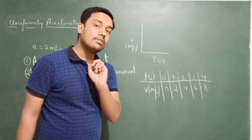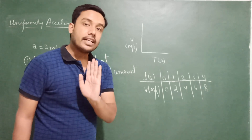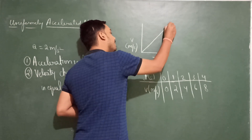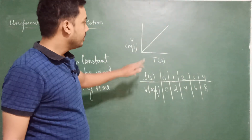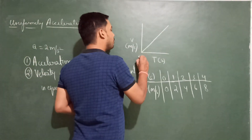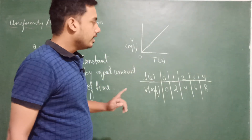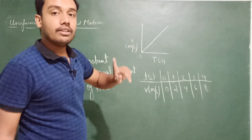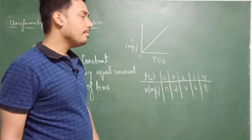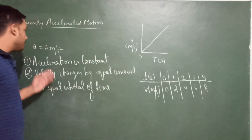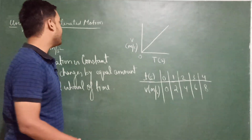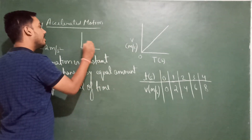Whenever any quantity changes by equal amount in equal interval of time, what kind of graph do we get? A straight line inclined to the time axis. Plot it and you will get the same result. So the velocity-time graph for uniformly accelerated motion is a straight line inclined to the time axis.